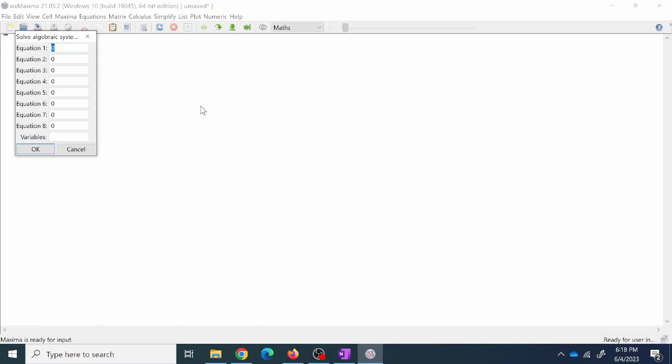Now a couple quick things about how you type in your equations to Maxima that are important. The first thing is that multiplication has to be an asterisk sign. You can't put two things next to each other. You can't use parentheses to multiply. There must be an asterisk sign. It's also case sensitive, and there has to be the same number of equations as variables in order to run.